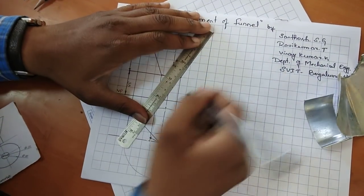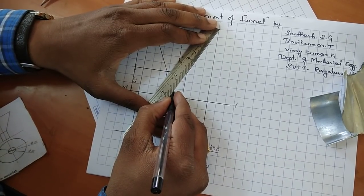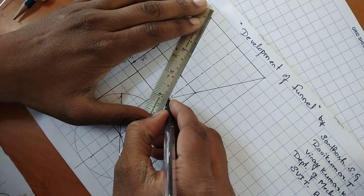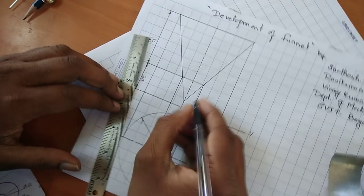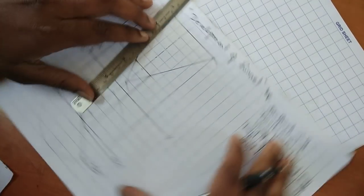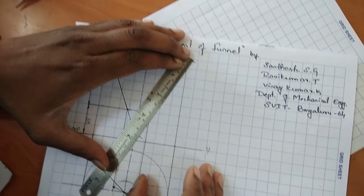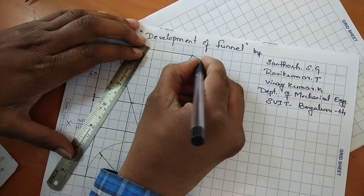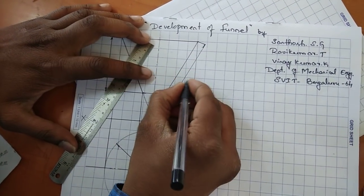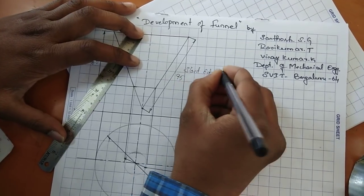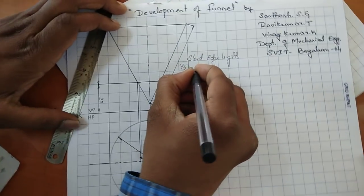We can do it very easily with a single diagram. Extend the slant edge up to the axis line on both sides. You will get the apex point. From this apex point, find out the slant edge length — do not take vertical height. The slant edge length comes out to approximately 95mm.